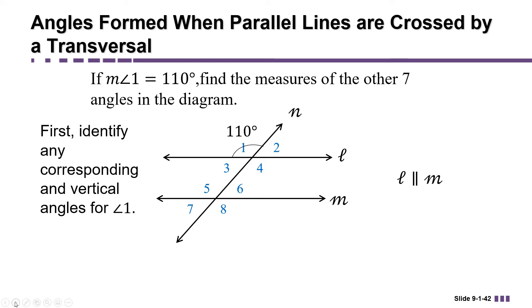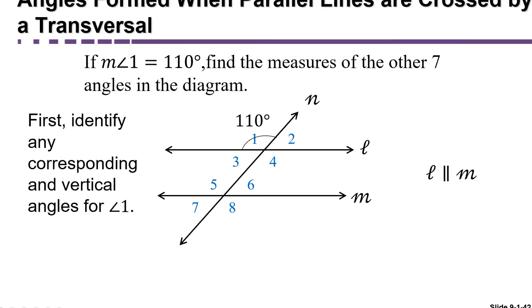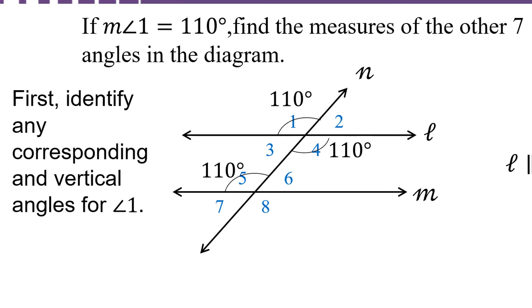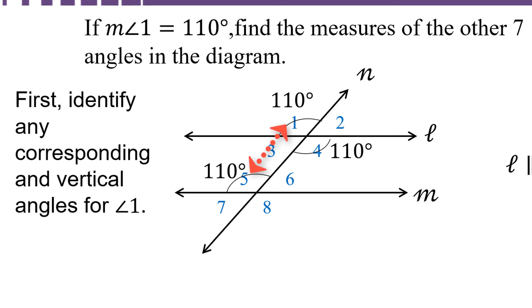We're going to first identify any corresponding and vertical angles for angle 1. Remember vertical angles are angles directly across sharing the same vertex. So angle 1 and angle 4 are vertical angles and vertical angles are equal. But angle 1 and angle 5 are also equal because they're corresponding. They're on the same side of the transversal and they're on the top side of the two parallel lines.